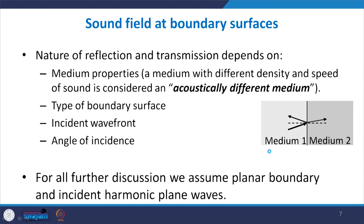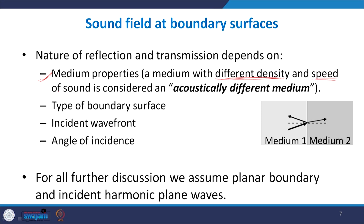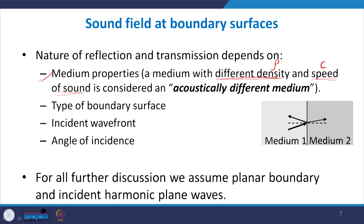The nature of transmission and reflection — how the energy gets split — depends upon several properties. First, it depends on the medium properties: for sound waves, a different medium means one with different density ρ and different speed of sound c. Whenever ρ and c values differ, the medium is acoustically different. So the nature of reflected and transmitted waves depends upon ρ₁c₁ of medium 1 and ρ₂c₂ of medium 2.